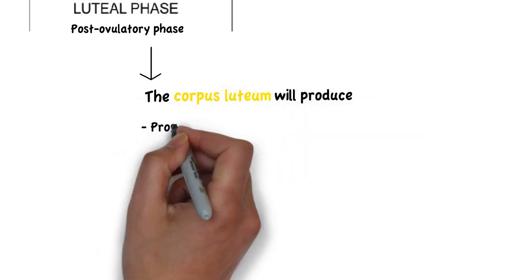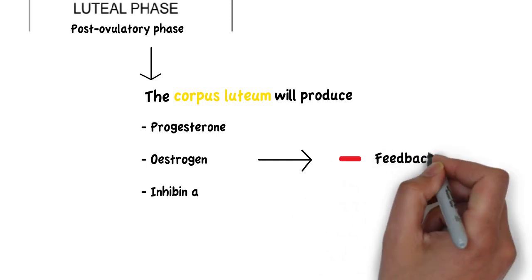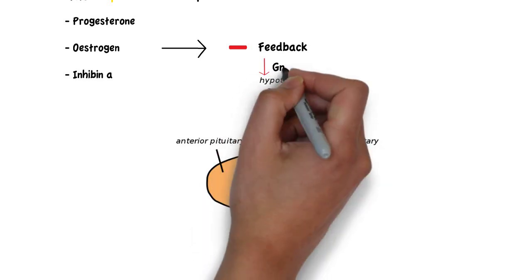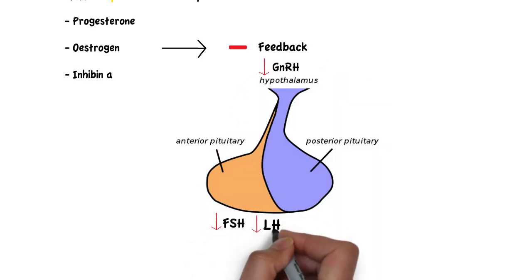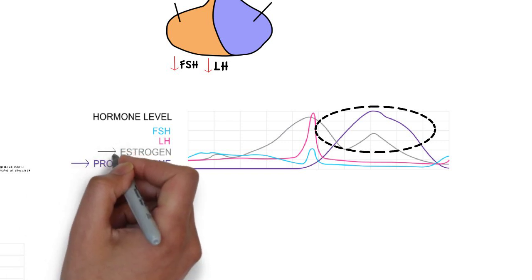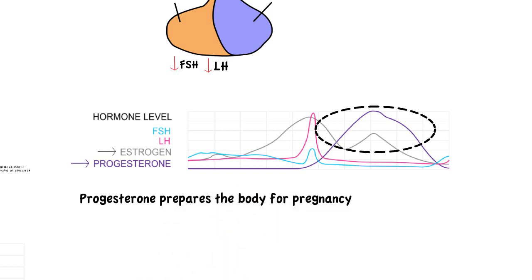The corpus luteum will produce progesterone, estrogen, and inhibin-A, which will negatively feed back into the pituitary gonadotrophs, leading to a decrease in GnRH, FSH, and LH, since there is no need to maintain the development of subsequent follicles at this stage. Therefore, as you can see in the graph, the luteal phase is characterized by high levels of progesterone and estrogen. Here, progesterone prepares the body for pregnancy by thickening and maintaining the endometrial lining.